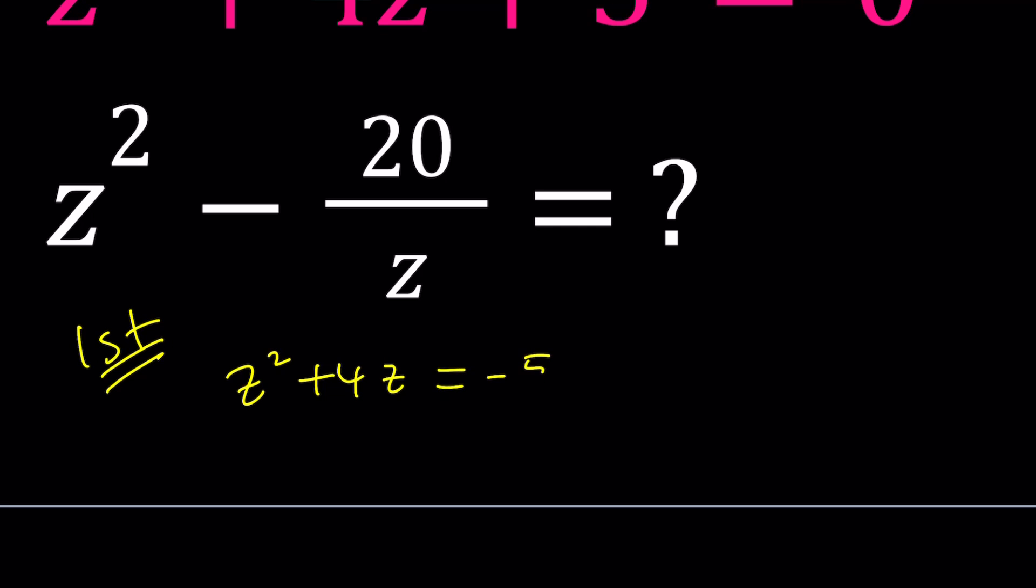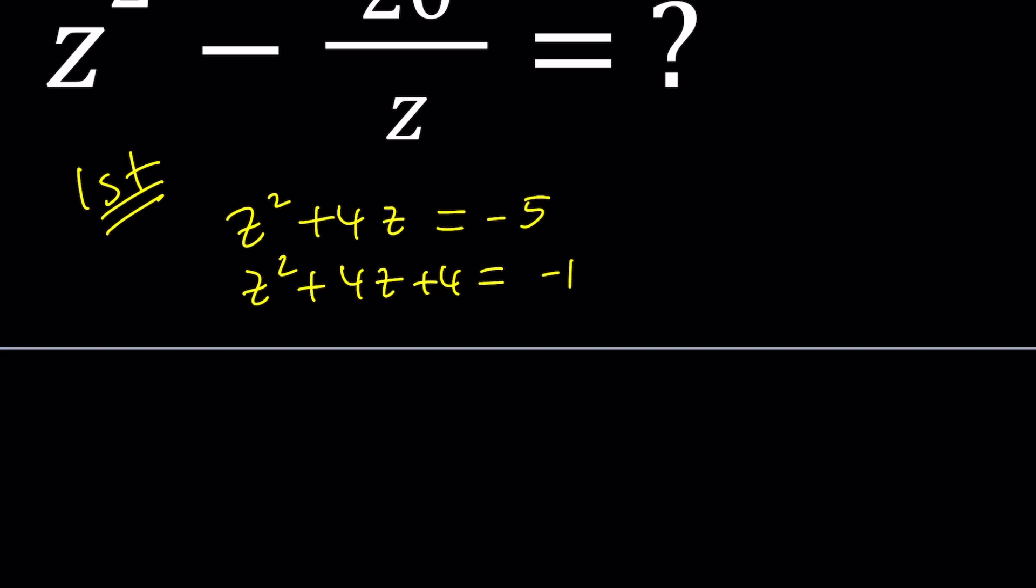First of all, subtract 5, and then add 4 to both sides. That gives you a perfect square on the left-hand side, which is z plus 2 quantity squared. And on the right-hand side, you can write the negative one as i squared.